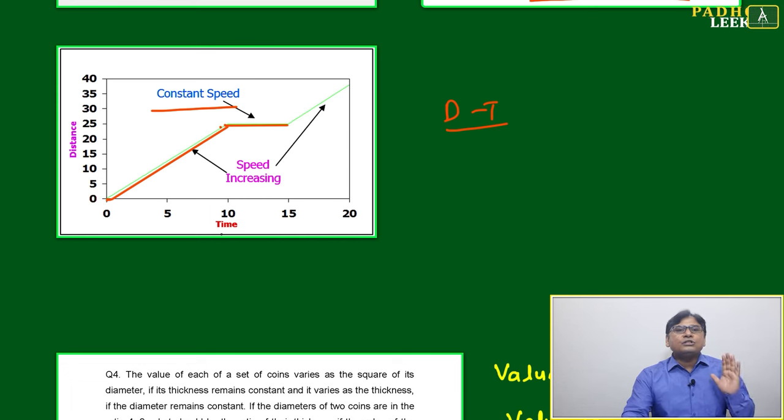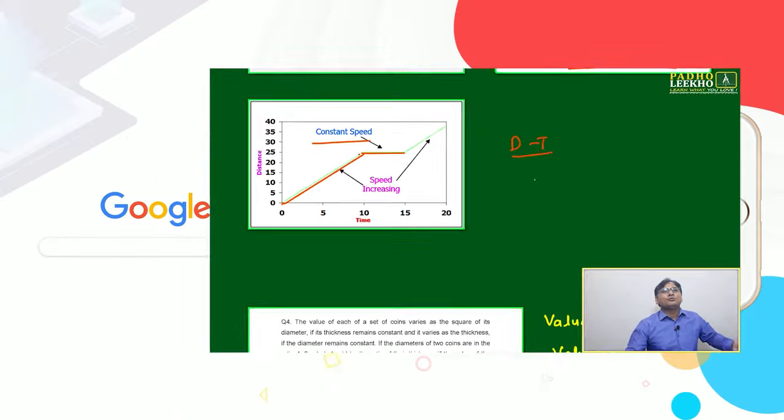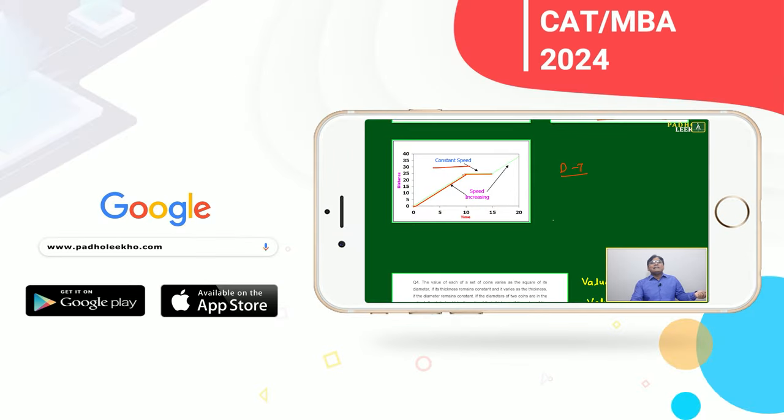For aptitude purposes, constant speed is mostly what will be checked. We are not going to deal with change in speed (increasing or decreasing speed), because that will bring another variable called acceleration, which we are not dealing with.